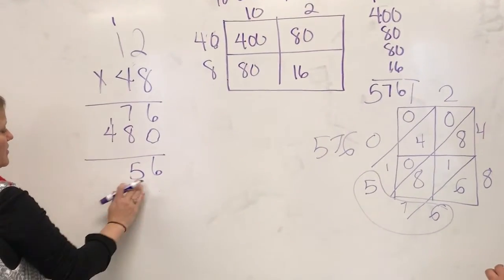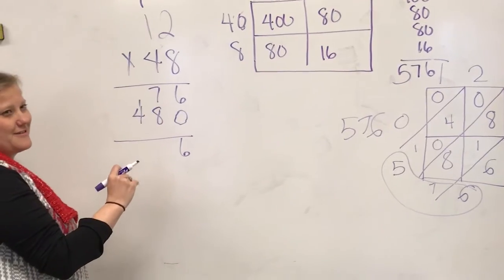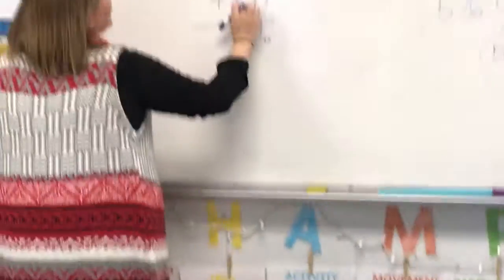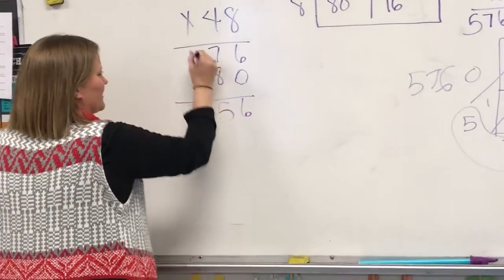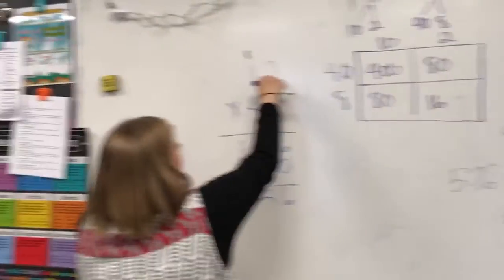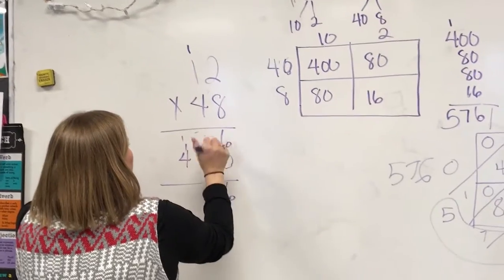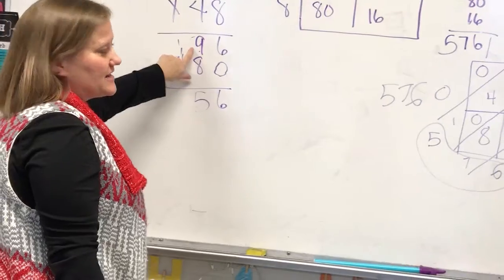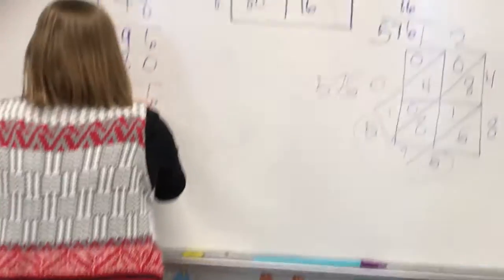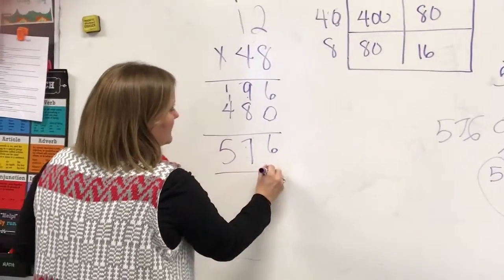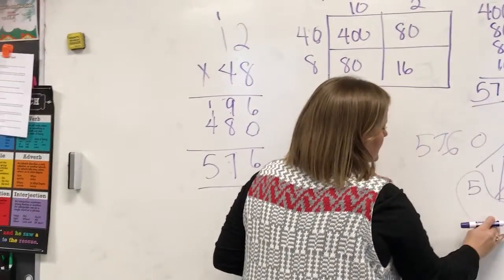7 plus 8 is 15. I'm sorry, where am I off? Help me out guys. 16, 1, that's 9. Where am I off, you guys? 8 plus 9 is 17. I knew I was off. 4 plus 1 is 5. 576, 576, 576, 576.